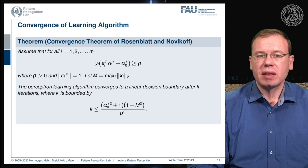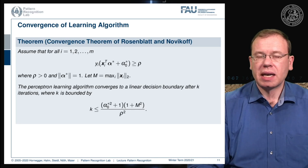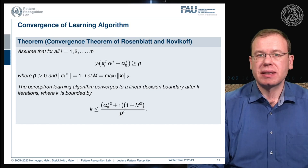The upper bound on k is given as (α₀*² + 1)(1 + M²) / ρ². The value of α₀* and the maximum norm M in the training data increase the number of iterations, while a larger margin ρ between the two sets decreases it, making the algorithm find a solution more easily.